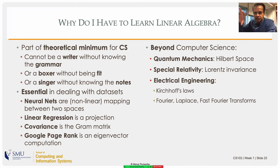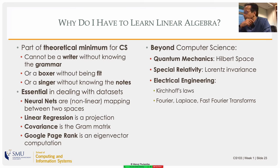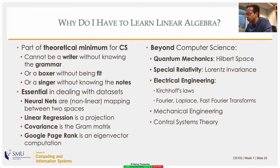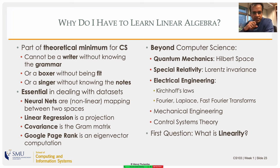Special relativity is basically a rotation in four dimensions — the spatial dimensions x, y, z and time — in what is called a Minkowski space. The mathematics is the same; the physical intuitions may be hard to follow, but the mathematics is quite simple. Linear algebra is also applied in electrical engineering: Kirchhoff's laws, Fourier and Laplace transformations. Fourier transformation is basically a basis transformation from the time domain to the frequency domain — all fundamentally just linear algebra.